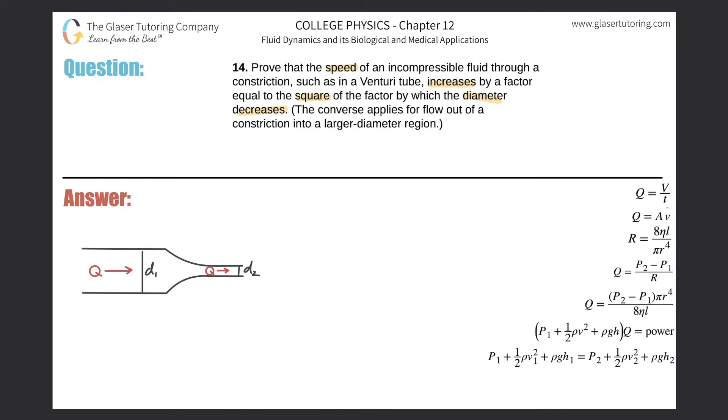Now, what we do know is we do know that the volume flow rate through the larger portion must equal the volume flow rate through the smaller. You can also think about this as the mass flow rate. They're basically tomato, tomato here. So what we have now, that being said,